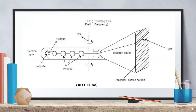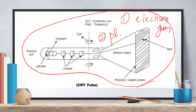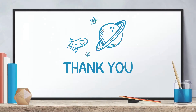So that is how a CRT monitor works. It is mainly made with a CRT tube. The electron gun generates electrons, which hit the phosphor-coated screen. The area hit generates light, and the combination of light creates the image we see. In the next class, we will cover more monitors and types of monitors. Thank you.